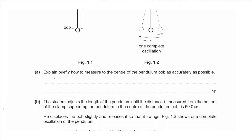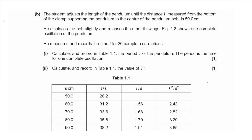We can say: use a set square as a pointer with a ruler, so the edge of the set square will point towards the center of the bob. Part B says the student adjusts the length of the pendulum until the distance L, measured from the bottom of the clamp supporting the pendulum to the center of the bob, is 50.0 centimeters.